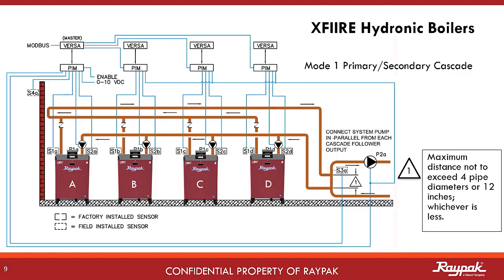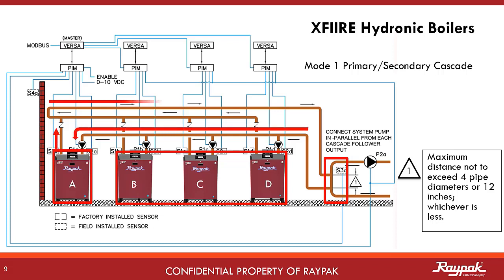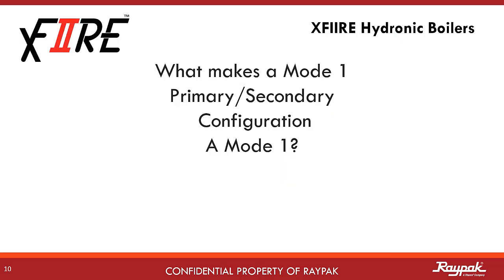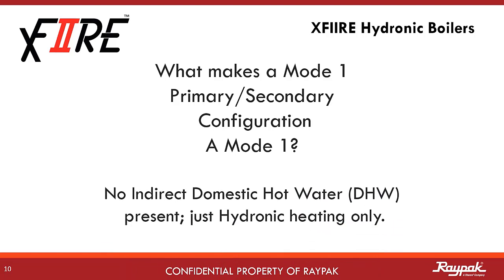Mode 1 can also be run in a cascade system. Here, boiler A on the left is the master boiler and boilers B, C, and D are the followers. There is one decoupler for the system and it supports the entire cascade. An important part of plumbing boilers in cascade is to use reverse-return logic: the first boiler out to the loop is the last boiler to receive water back from the loop. What makes a Mode 1 primary-secondary a Mode 1? It is not what is there, but what is not there — there is no indirect domestic hot water system present. It is just a straight-up hydronic heater.